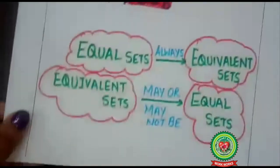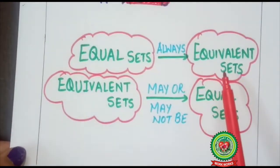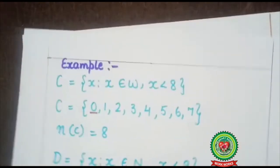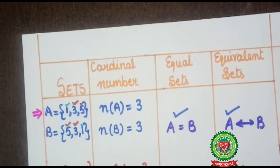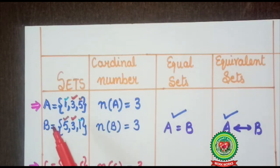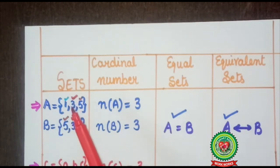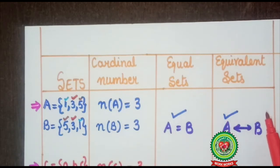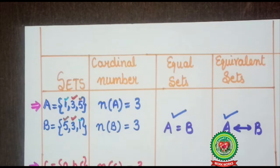Now remember: equal sets are always equivalent, but equivalent sets may or may not be equal. Looking at a chart with columns for sets, cardinal number, equal sets, and equivalent sets — set A is {1, 3, 5} and set B is {5, 3, 1}. They have the same elements and the same cardinal numbers. If cardinal numbers are equal the sets are equivalent, and if they also have the same elements the sets are equal. So these sets are both equal and equivalent, proving that equal sets are always equivalent.